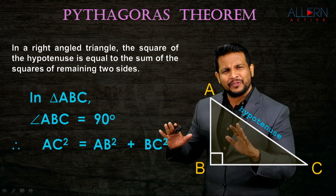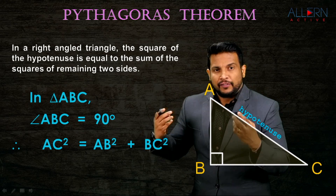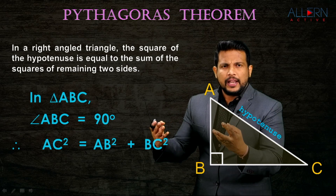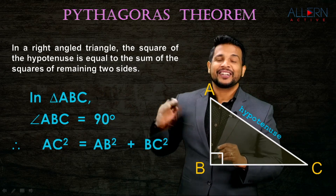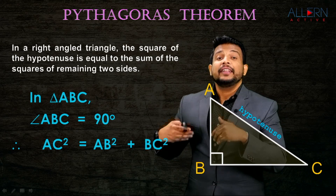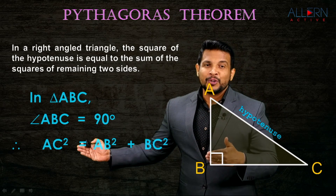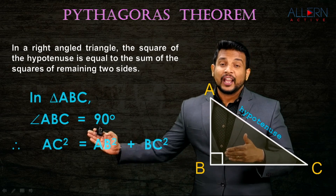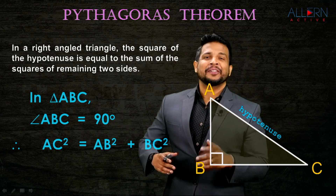That simple it is. But whenever we write or apply Pythagoras theorem in any sum, we are supposed to write it this way: first write the name of the triangle, then write which angle is 90 degrees, and then write the next step - that is, hypotenuse square is equal to the sum of the squares of the remaining two sides. And once we write this, in brackets we write the reason as Pythagoras theorem.